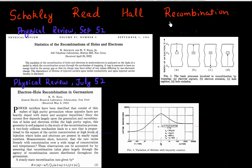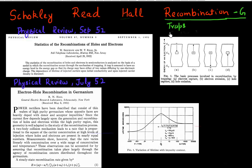In this video, I want to derive the formula for recombination and generation which is assisted by the presence of traps. Many times it's the dominant recombination and generation mechanism, especially for indirect band gap semiconductors. And we'll derive this formula in this video.